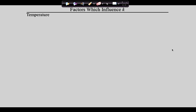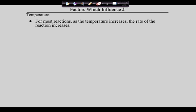Now let's look at the next one, which is temperature. We've already talked about this. What happens to the rate of the reaction as temperature goes up? Higher temperature, faster rate. For most reactions — notice we've got to put our little disclaimer there; it's not all. There are some reactions that are actually not favored at high temperatures. But for most reactions, as the temperature goes up, the rate of the reaction goes up.